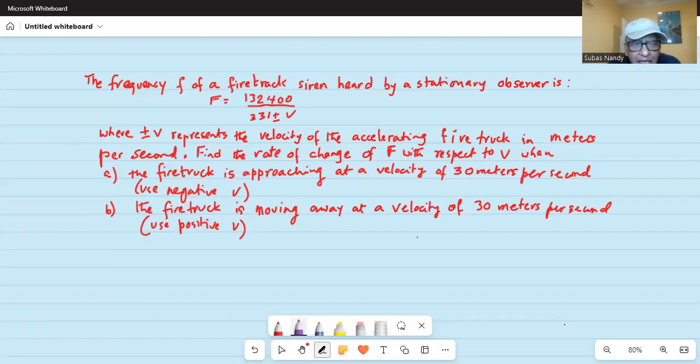When a, the firetruck is approaching at a velocity of 30 meters per second, use negative v. Part b, the firetruck is moving away at a velocity of 30 meters per second, use positive v. So, let's do part a first.